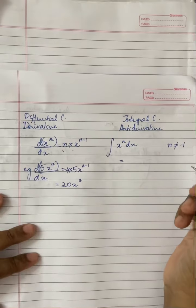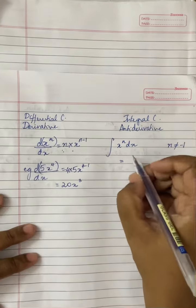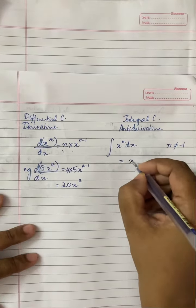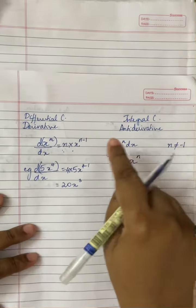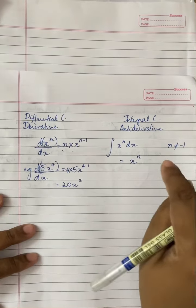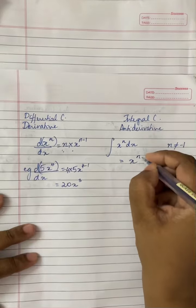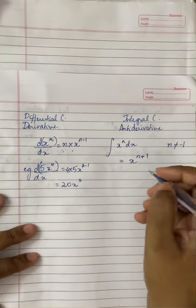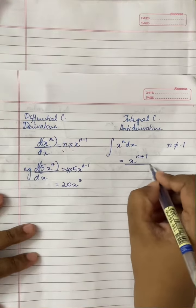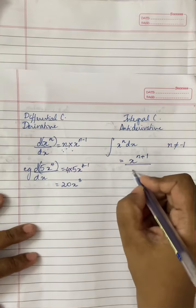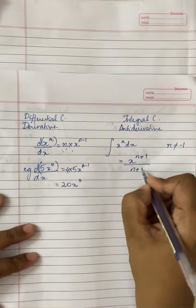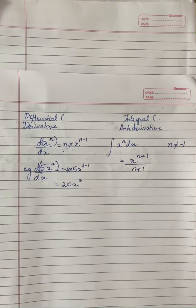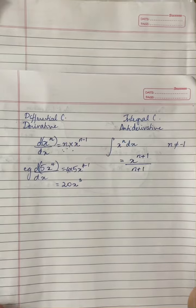So the expansion for this formula would be x. Since we reduced the power in differentiation, we increase the power in integration. So x power n plus 1 divided by, here we multiplied, so here we divide by n plus 1.